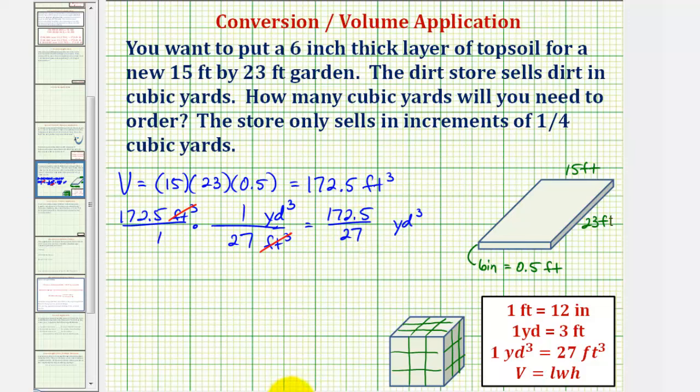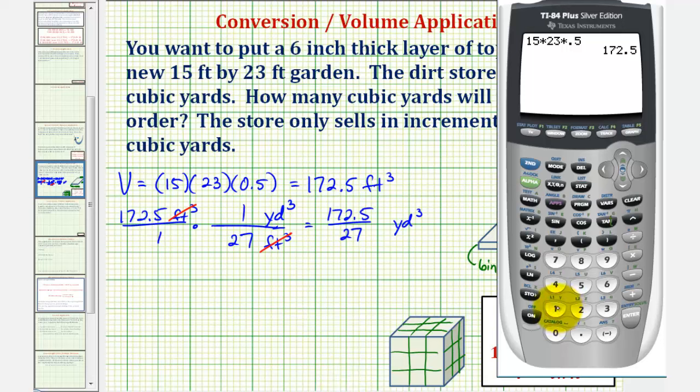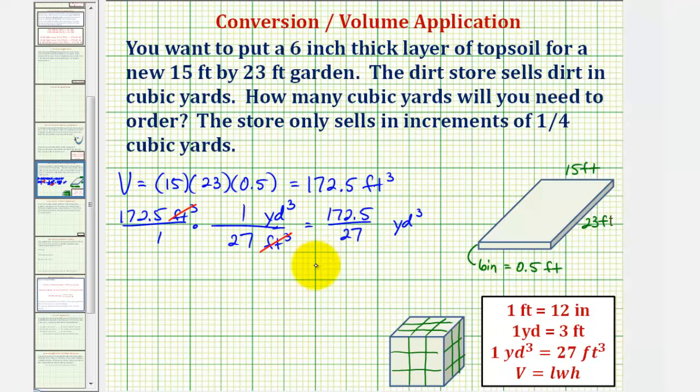And now we'll perform this division. 172.5 divided by 27, if we run to two decimal places, this will be approximately 6.39. So the volume we need is approximately 6.39 cubic yards.